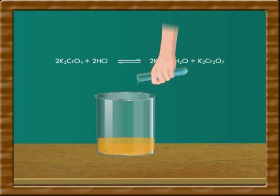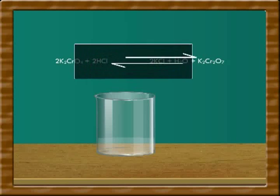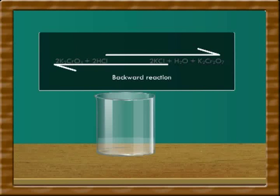Then, add 2 ml of water to the above solution. The orange color fades out. Now, the equilibrium is shifted to the left.